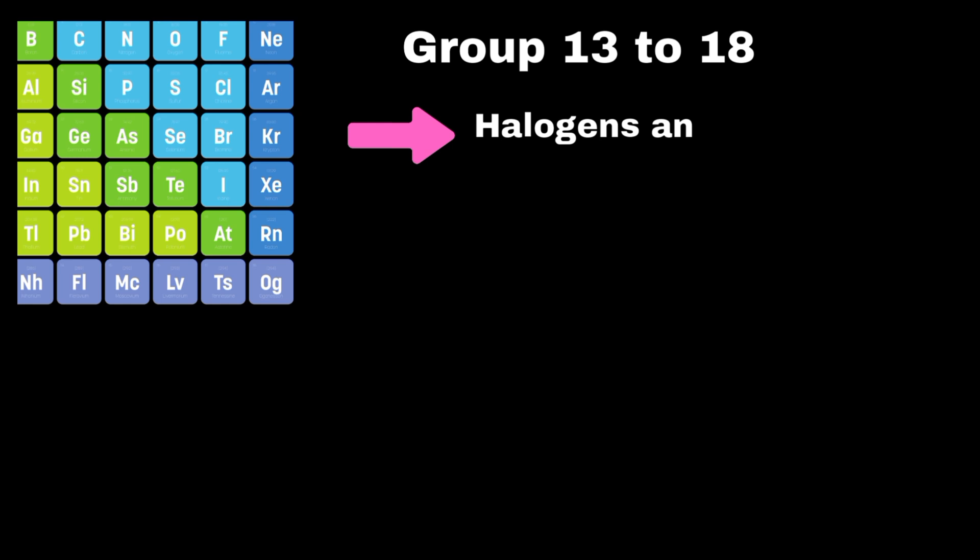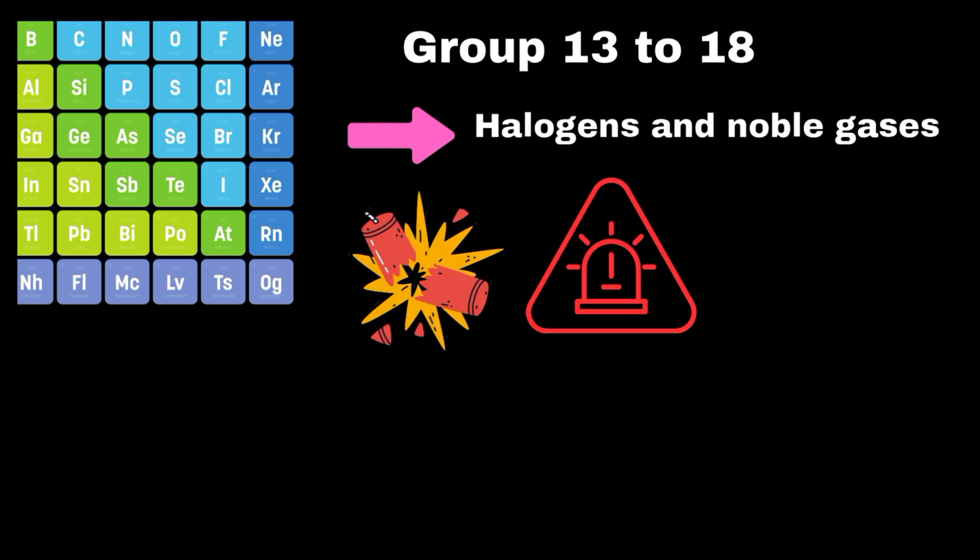The P block consists of elements in groups 13 to 18. Key subgroups include the halogens and noble gases. Halogens like chlorine and iodine are highly reactive nonmetals that readily form salts when they react with metals.